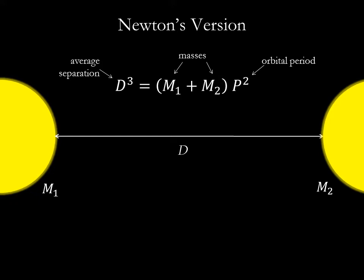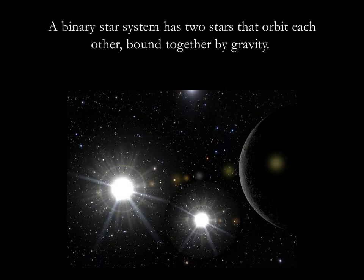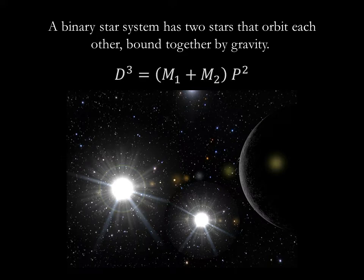That's the definition of a binary star system, and there are plenty of those in our galaxy. A binary system consists of two stars orbiting around their common center of gravity. If we're going to use Newton's version of Kepler's third law to get at the masses, we need to be able to measure the distance between the stars and their orbital period. Whether or not we can observe these is going to depend on how far away the system is and how it's oriented relative to Earth.